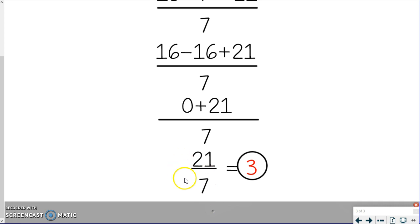It gets me 21. So now I have 21 over 7. And again, remember that's like division. So 21 divided by 7 equals 3.